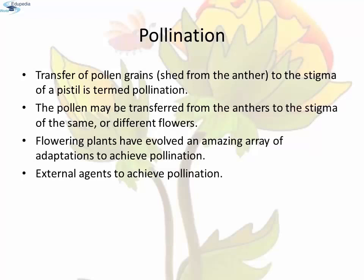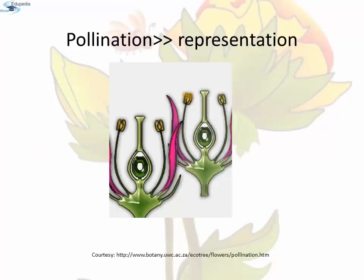Transfer of pollen grains shed from the anther to the stigma of a pistil is termed as pollination. The pollen may be transferred from anthers to the stigma of the same or different flowers. Flowering plants have evolved an amazing array of adaptations to achieve pollination. They make use of external agents to achieve pollination. Here you can see the representation of pollination — the transfer of pollen grains from the anther to the stigma of a pistil.